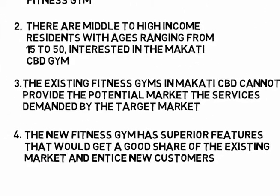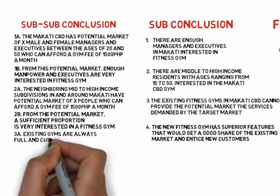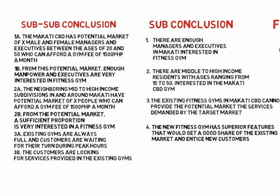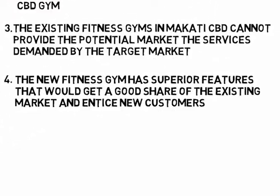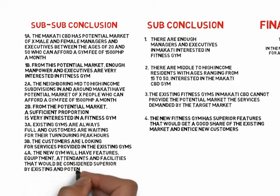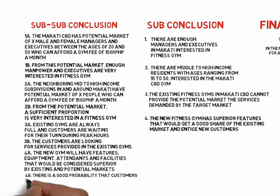The third sub-conclusion — that existing fitness gyms in Makati CBD cannot provide the services demanded by the target market — is supported by two sub-sub-conclusions: first, existing gyms are always full and customers are waiting their turn during peak hours; and second, customers are looking for services not provided in existing gyms. The fourth sub-conclusion — that the new fitness gym has superior features — is also supported by two sub-sub-conclusions: first, the new gym will have equipment and facilities considered superior by existing and potential markets; and second, there is a good probability that customers of existing gyms would switch to the new gym.